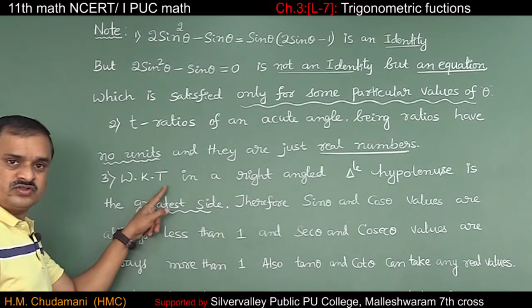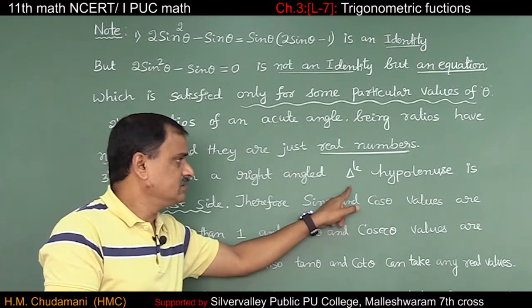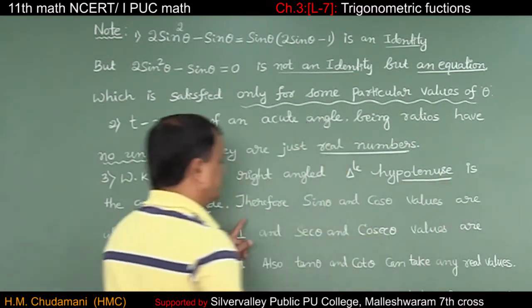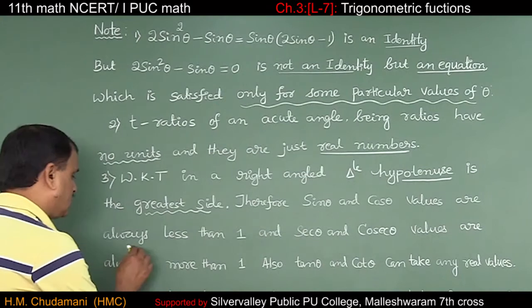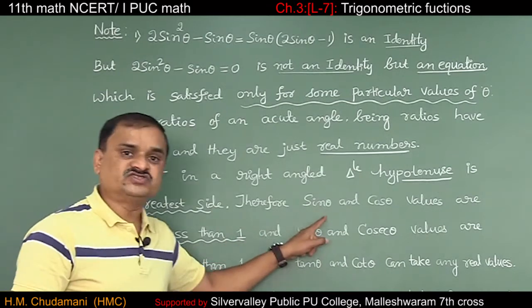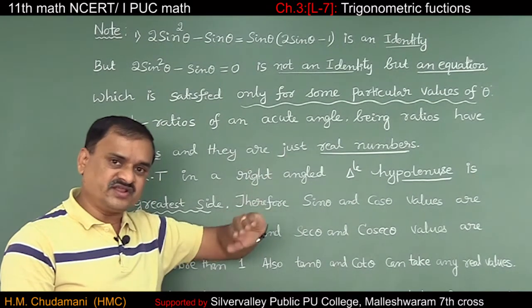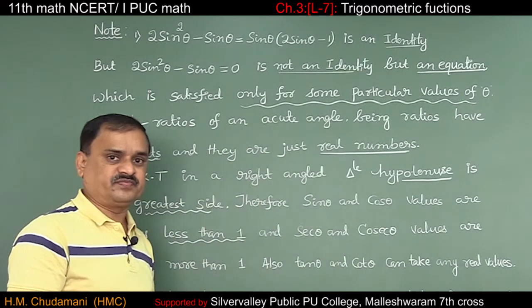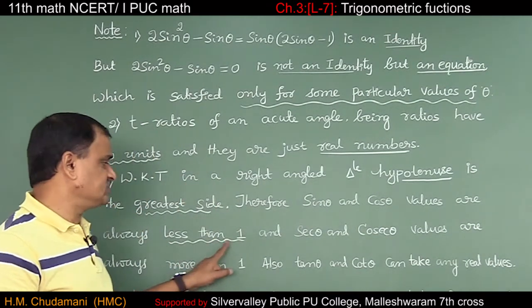Third note: in a right-angled triangle, the hypotenuse is the greatest side. Therefore, sin θ and cos θ values are always less than 1. Why? Sin θ is opposite over hypotenuse. Since hypotenuse is the greatest side, the denominator is larger, so the value is less than 1.